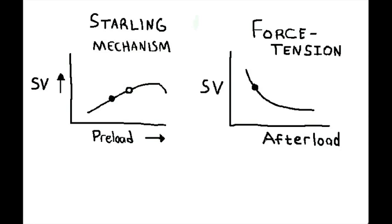Here is how they work. The Frank-Starling curve: if you have a decreased preload, you have less stretch, thus a less forceful contraction and less stroke volume. If preload is increased, you have more myocardial stretch and thus a greater force of contraction and a greater stroke volume. The force-tension curve tells us that stroke volume is not only a function of preload but afterload as well, and they're inversely related — greater afterload means decreased stroke volume, and decreased afterload means increased stroke volume.